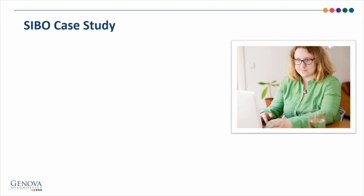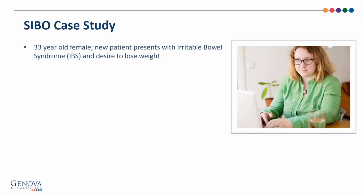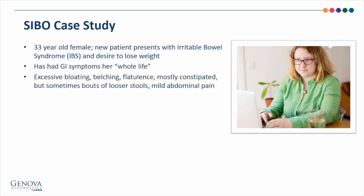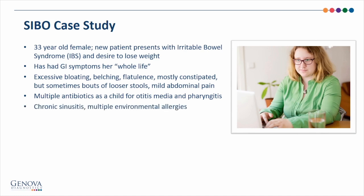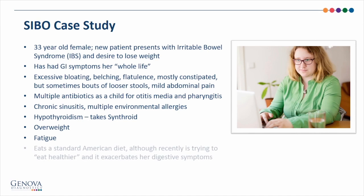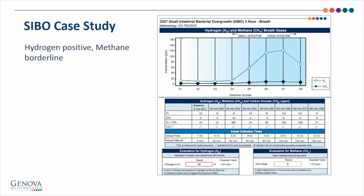Now we can look at a case and apply what we've learned. This is a 33-year-old female, a new patient, and she is presenting with irritable bowel syndrome diagnosed by the Rome IV criteria. She also has a desire to lose weight. Her GI symptoms include bloating, belching, flatulence. She's mostly constipated, although she does have intermittent, looser stools a few times per month, and mild abdominal pain. She's had multiple rounds of antibiotics as a child. She experiences chronic sinusitis, multiple environmental allergies. She also has hypothyroidism and takes Synthroid. She's overweight and fatigued. She eats a standard American diet, although recently she started trying to eat healthier, but it exacerbated her digestive symptoms. She has a low-stress desk job and is not very active. Here is the patient's SIBO test result.